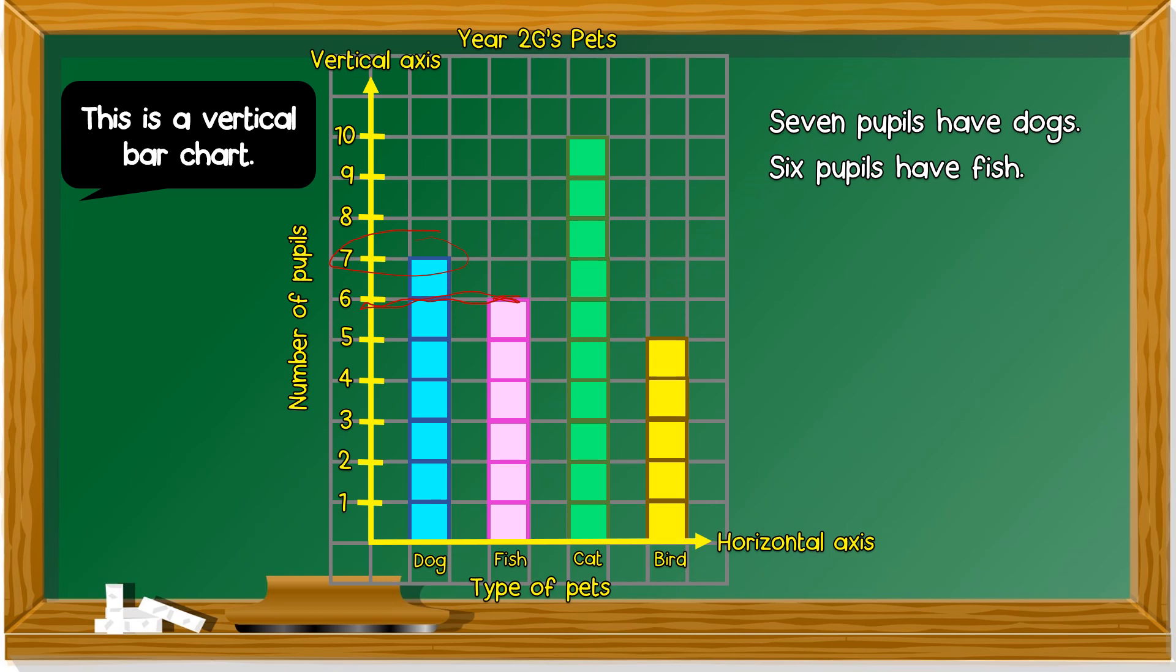Next one, we look at cat. Cat. Here the line, the highest line. Move to the side. You get? Cat. Yes, it's ten. So ten pupils have cats. Ten pupils have cats.